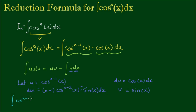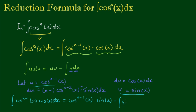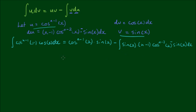The integral of cosine to the n-1 power times cosine x dx equals cosine to the n-1 power (u) times sine x (v), minus the integral of v times du — which is sine x times n-1 cosine to the n-2 power times negative sine x dx. The two negatives combine to a positive, and sine x times sine x becomes sine squared x, leaving us with n-1 times cosine to the n-2 power of x dx.